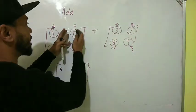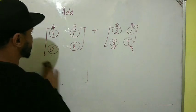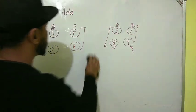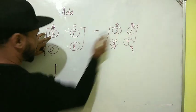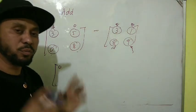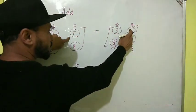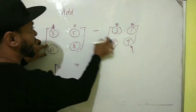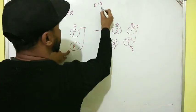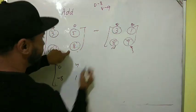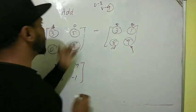We add first with first, second with second, third with third, and fourth with fourth. Same with subtraction. Let's write minus. So three minus three is zero. Five minus one is four. Zero minus eight is minus eight. And eight minus nine will be minus one — nine is greater, so sign plays a very important role.